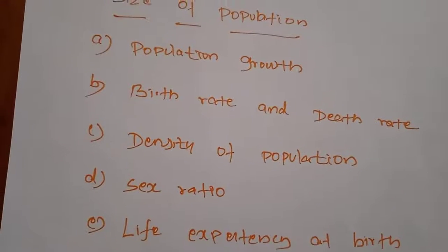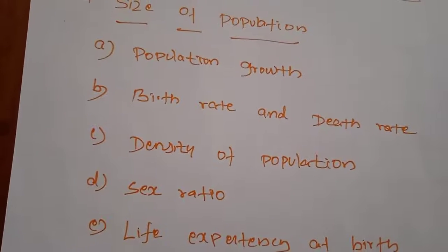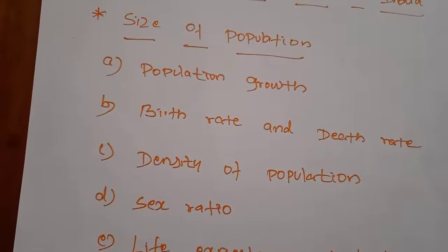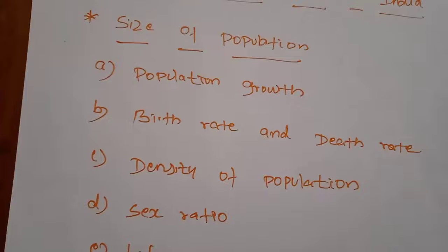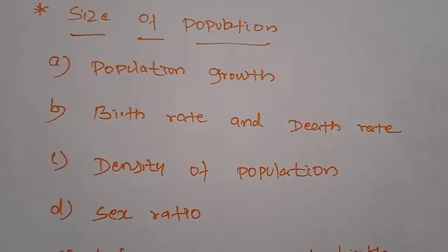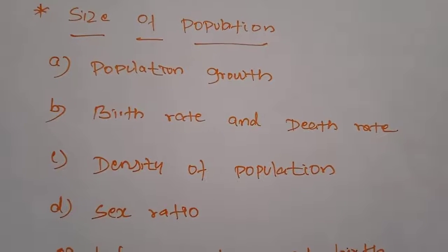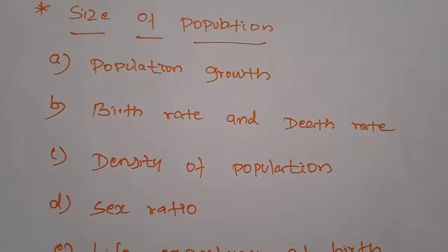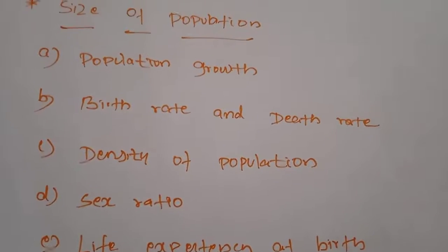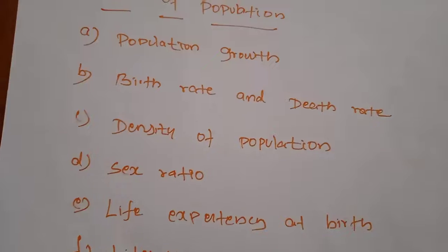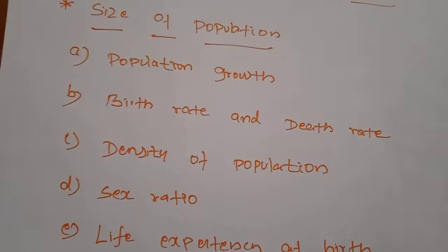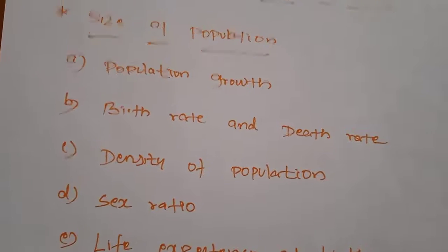The negative growth during 1911–21 was due to the rapid and frequent occurrence of epidemics like cholera, black fever, and influenza, and also famines. The year 1921 is known as the year of Great Divide for India's population, as population started increasing from that point. The year 1951 saw the population growth rate come down from 1.33% to 1.25%, hence it is known as the year of small divide.